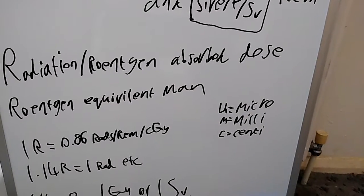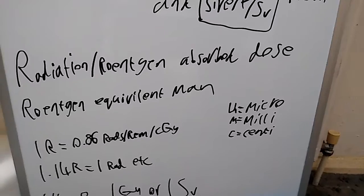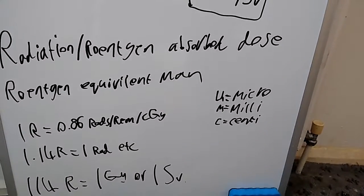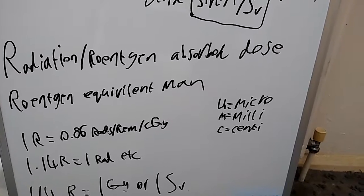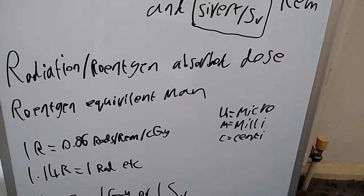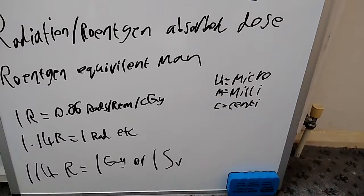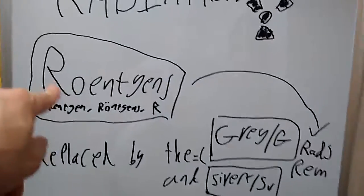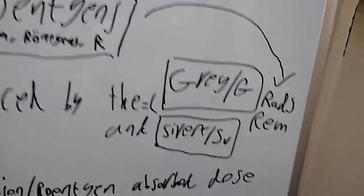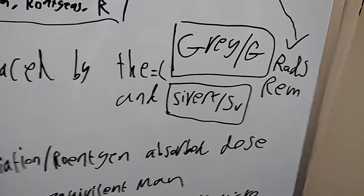And as I said, just remember that sometimes certain Geigers will do 1R equals 1C or whatever, when that isn't actually the case. But in that case, I wouldn't use the sort of RAD or REM measurement, if it's incorrectly used on there. But yeah, so there you go. That's sort of a 1920s radiation unit, the Röntgen, all the way up, where they evolved into different things as time went on. Hopefully you found this useful. Thank you.